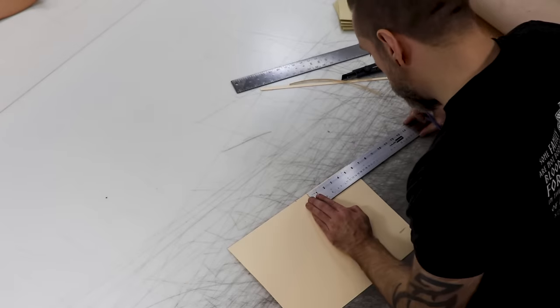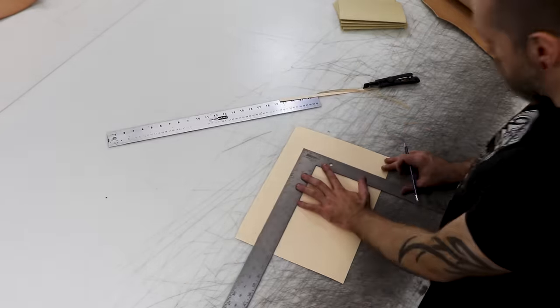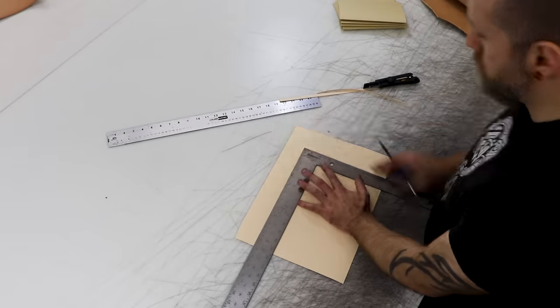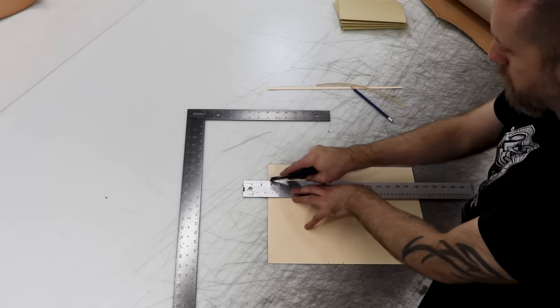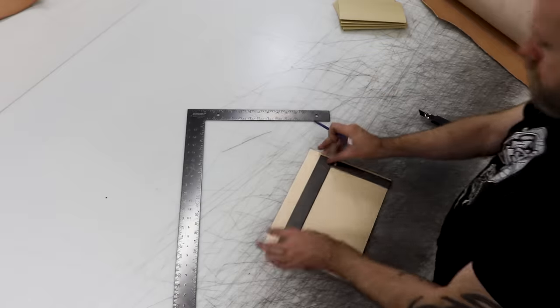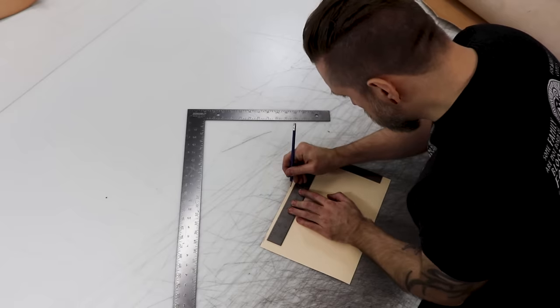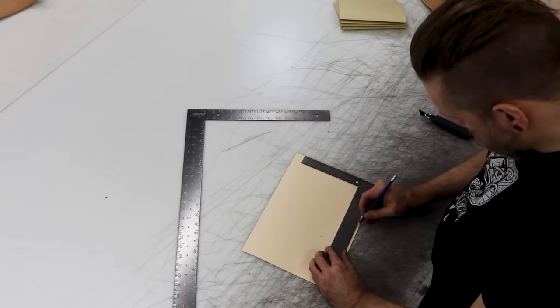Now I'm just giving another quick eyeball for the width of the pages when they're all in the book cover itself. Then I'll square everything up and cut the last two sides of my cover. I'm just matching both sides so I can draw a line.